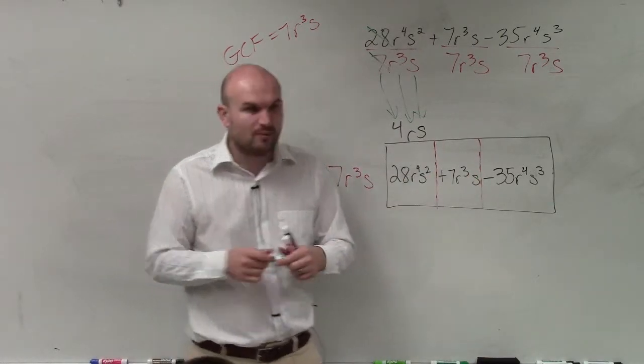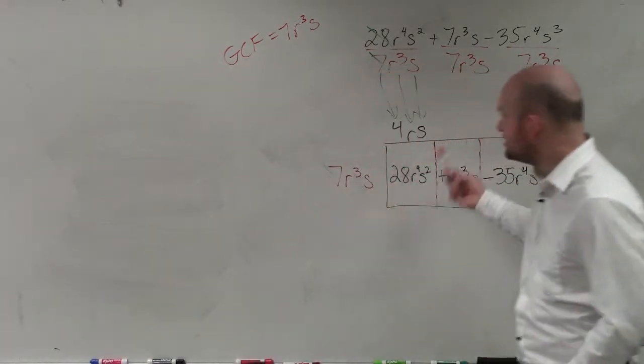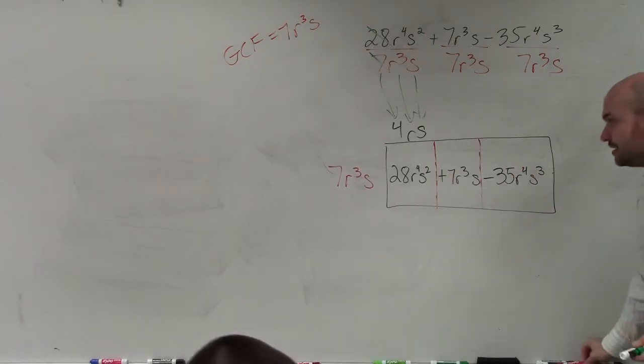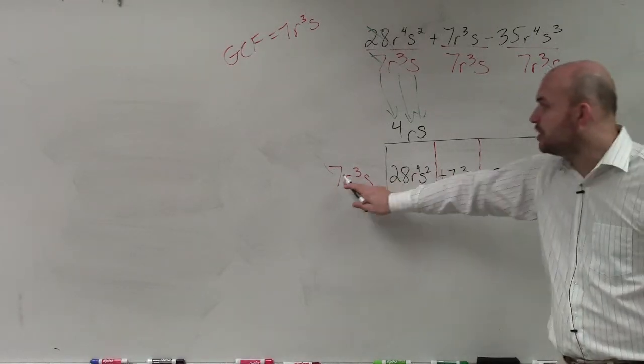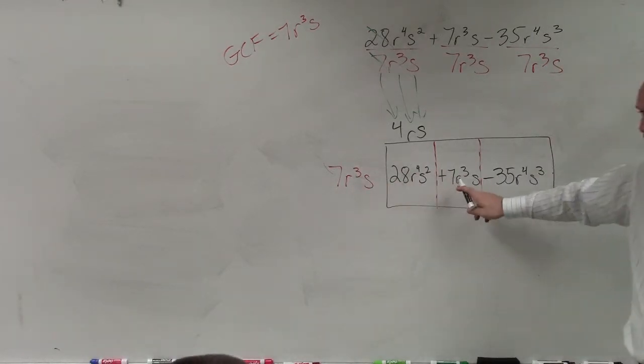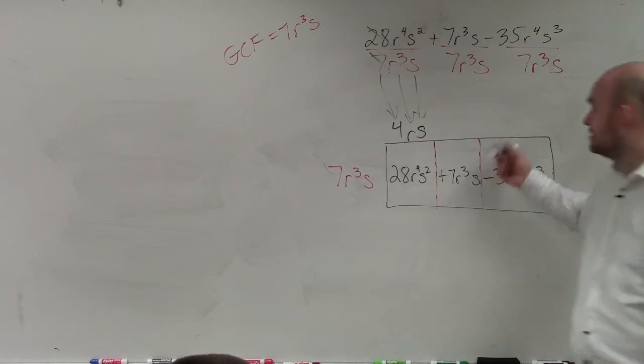Whatever really kind of works for you, but I want you guys to understand at least the box one so you have an understanding of where these numbers are coming from. So 7r cubed s times what has to give you 7r cubed s? 1.